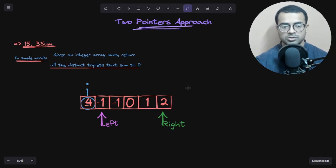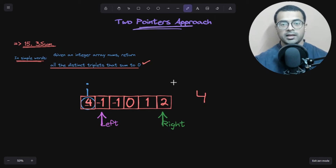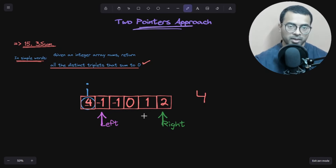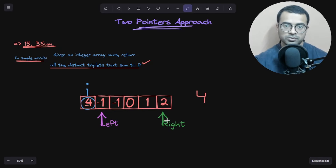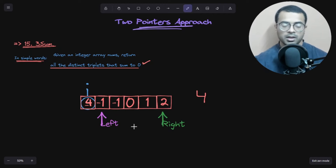When i is at minus four, we need left and right to point to elements that sum to four. If the total of all three is less than zero, we move left one step forward. If the total is greater than zero, we move right one step backward. If we find a total equal to zero, we've found a valid triplet.